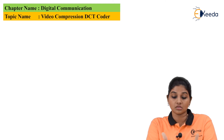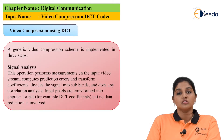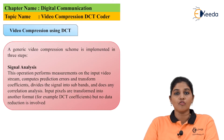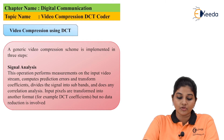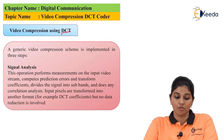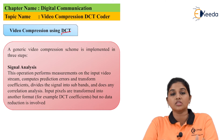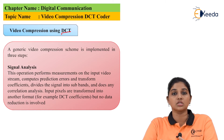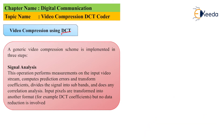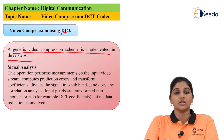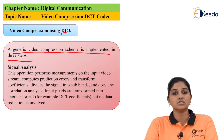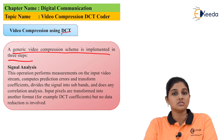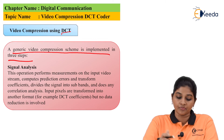Video compression also acts as a key ingredient in most communication systems and serves as a gateway for transferring multimedia files in entertainment, education, and other communication systems. In this topic we are going to talk about one method of video compression — DCT, which stands for Discrete Cosine Transform. A generic video compression is implemented in three steps: signal analysis, quantization, and entropy coding.